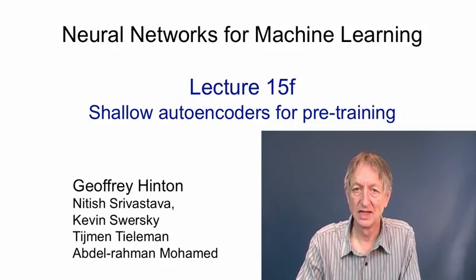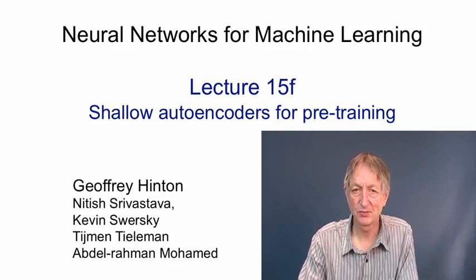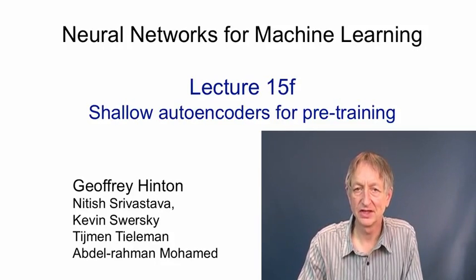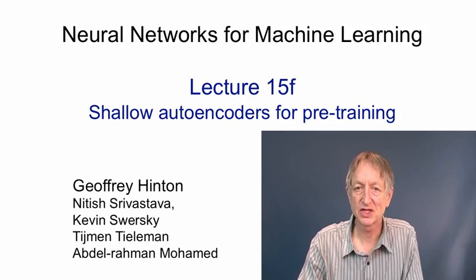In this video, I'm going to talk about alternative pre-training methods for learning deep neural nets. I introduced pre-training using restricted Boltzmann machines trained with contrastive divergence. But after that, people discovered there are many other ways to pre-train layers of features. And indeed, if you initialise the weights correctly, you may not need pre-training at all, provided you have enough labelled data.